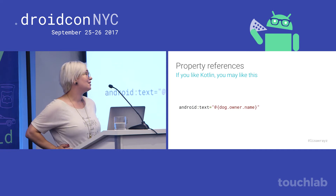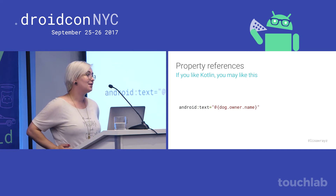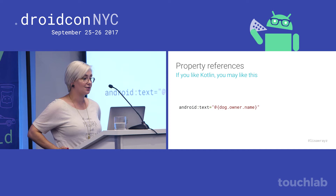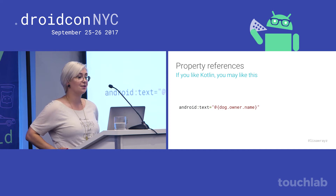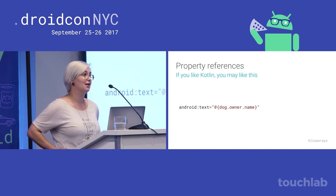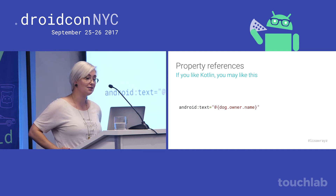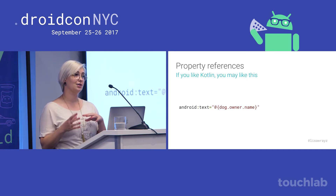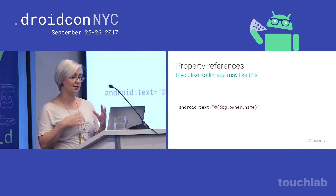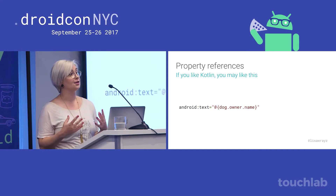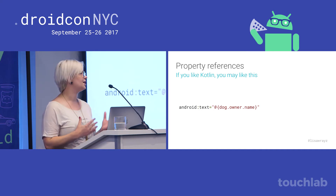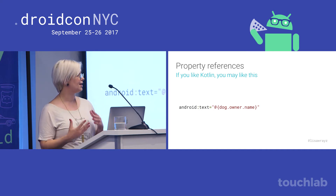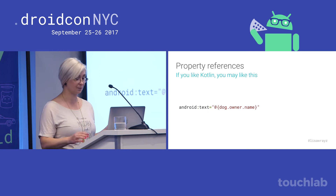On to property references. If you like Kotlin, then what you do in data binding is going to look pretty natural. The expression language in data binding is not Kotlin, but some things are very similar. It uses property references even if the original class has JavaBeans-style getters and setters, so you can say dog.owner.name — short and sweet.